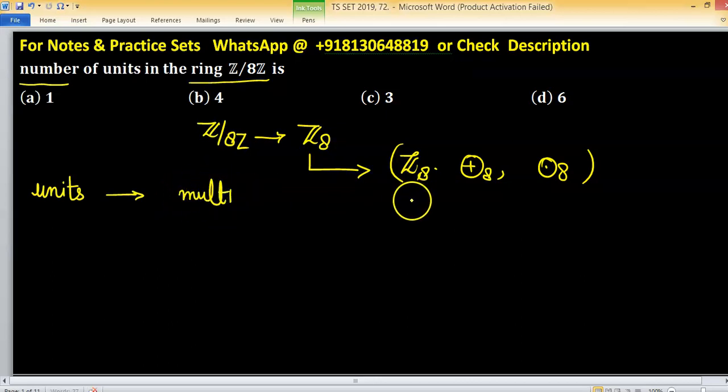So we need to seek number of elements having inverse. In Z8, other than zero, have multiplicative inverse.